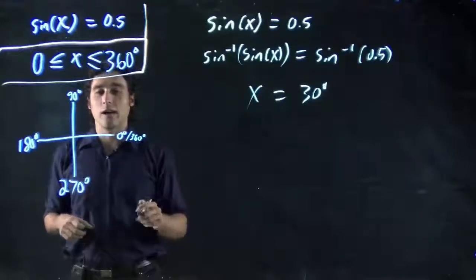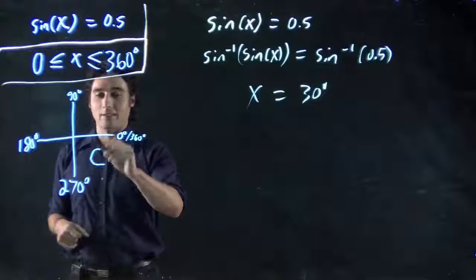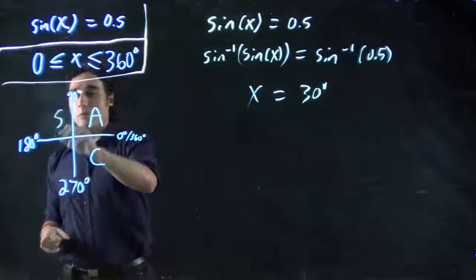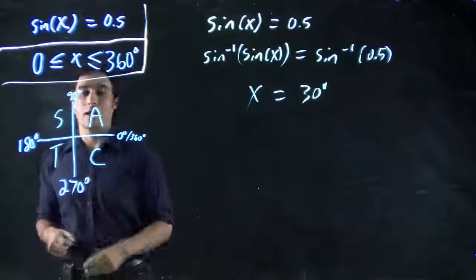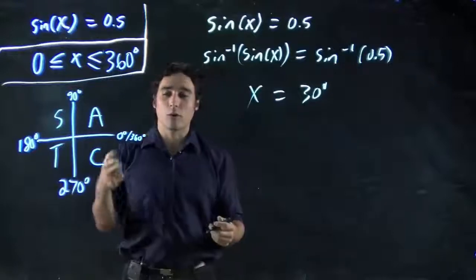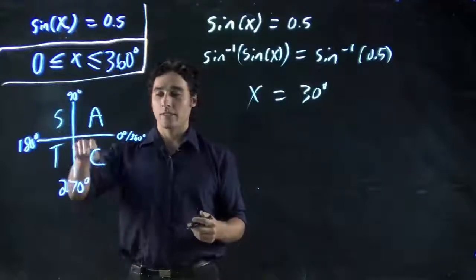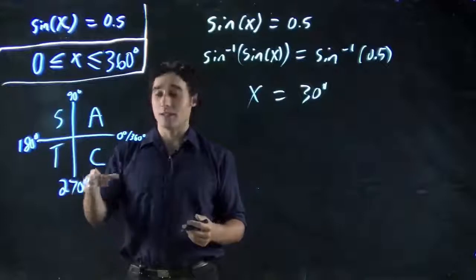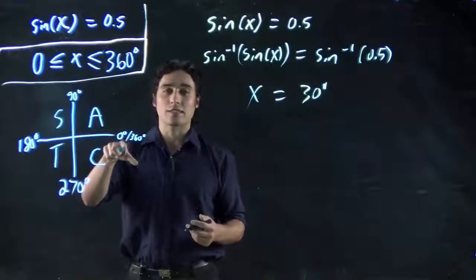But what we want to do is figure out where the different things are going to be positive. And will you bear with me? You'll see why this is important in a second. What we do is write out CAST. Starting with that quadrant down here, we write out CAST. And this is useful. It's a way to remember where things are positive.